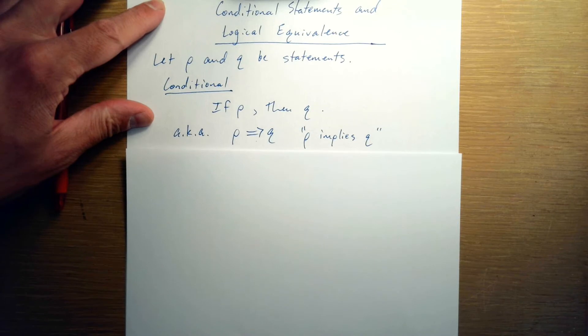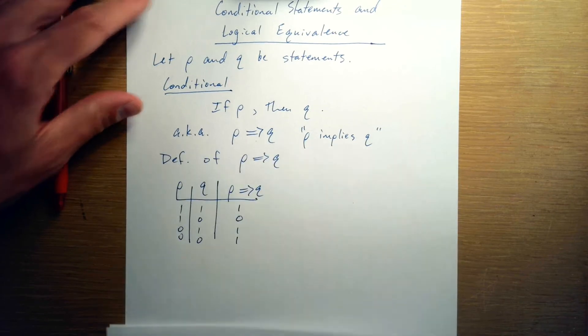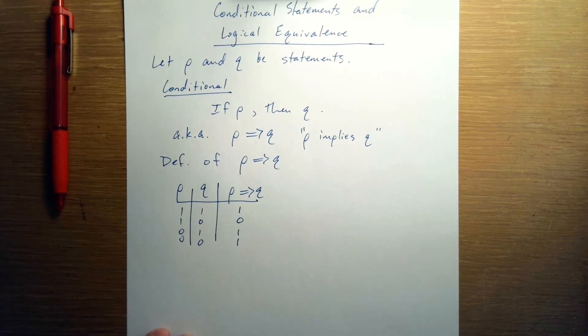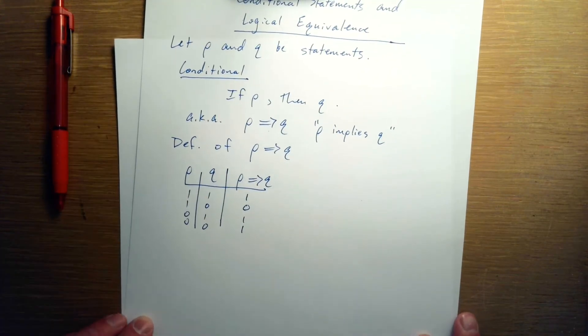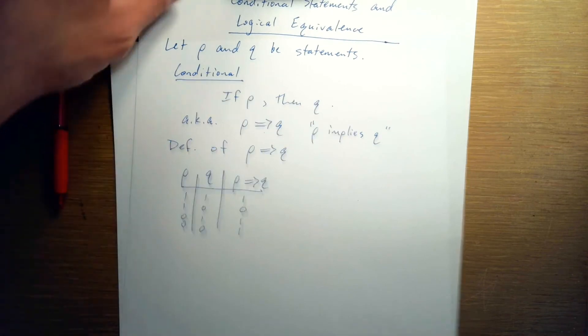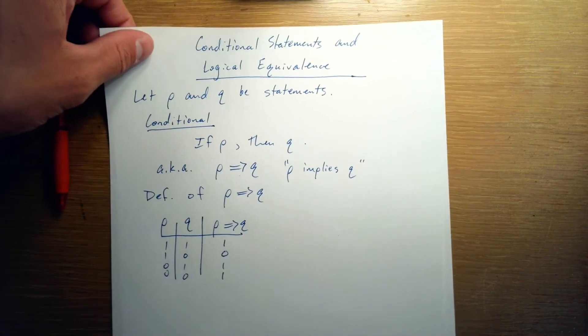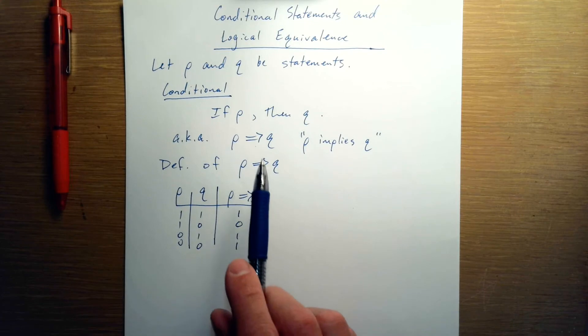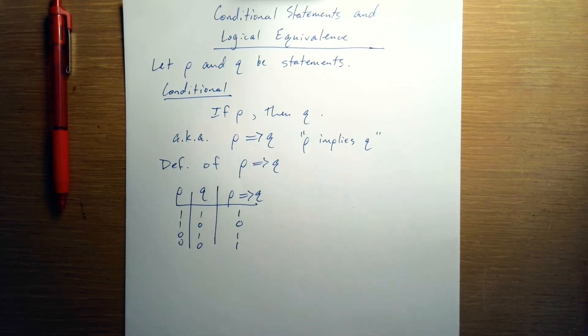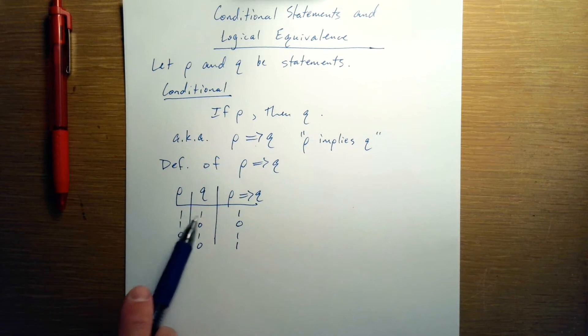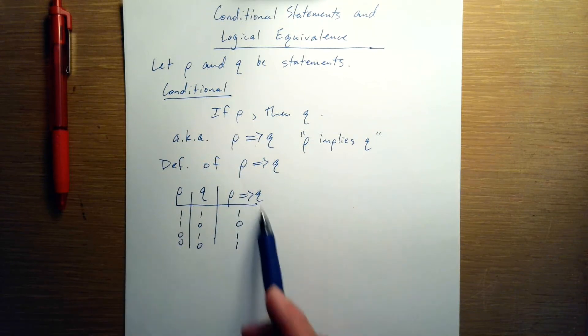We know from previous videos that if we want to actually understand what the conditional statement is, then we have to define it by a truth table. So let's make that truth table. Since the conditional statement P implies Q has two ingredient statements, we need four rows. And that's these four possibilities. And this is how we define the conditional statement.